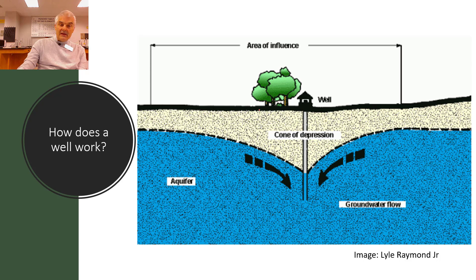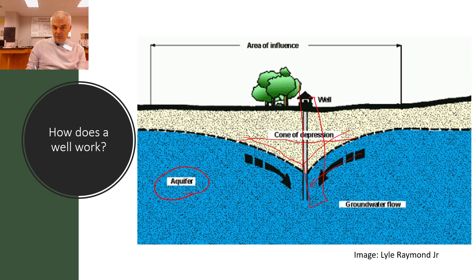We've talked about wells but haven't really talked about how a well works. You've got an aquifer underneath and you drill a big hole. Over time, as you draw the water into the well, it diminishes the water table because all this water that used to be here is now being used up. It doesn't replenish itself, and the wells can go dry. The solution is to drill deeper or wait and allow it to recharge.